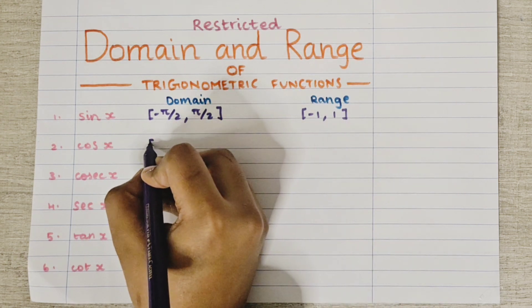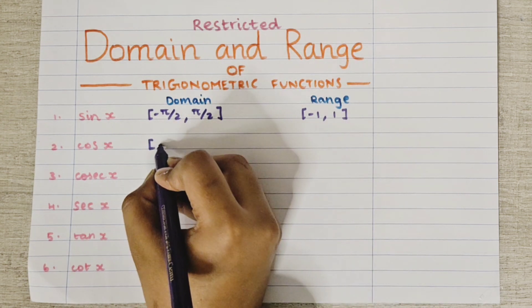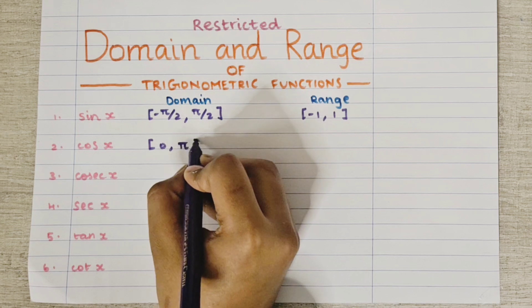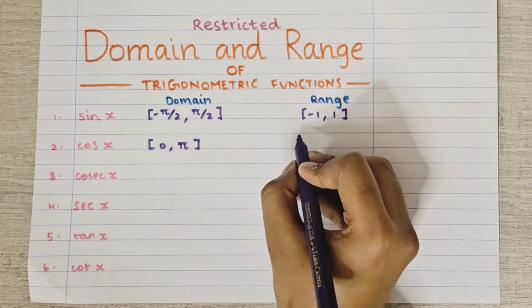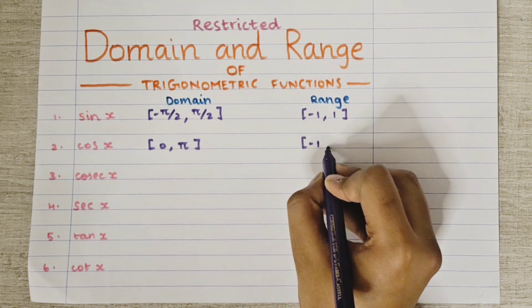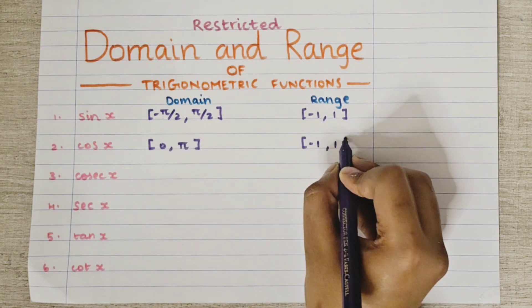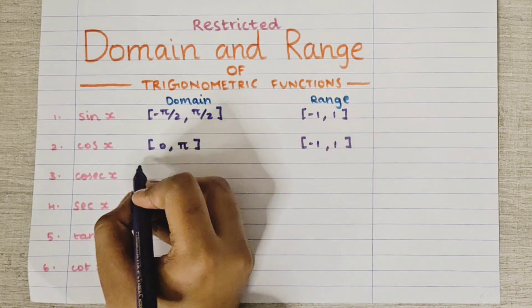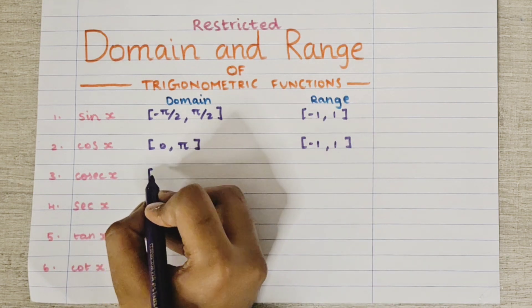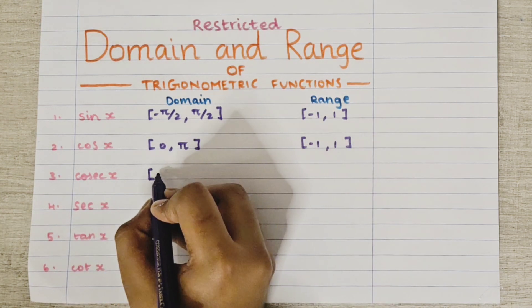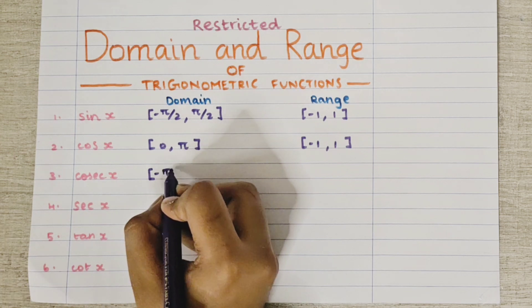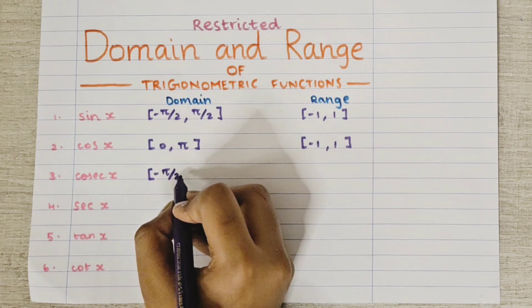For the second function, cos x, the domain is the closed interval [0, π] and the range of cos x is the closed interval [-1, 1].